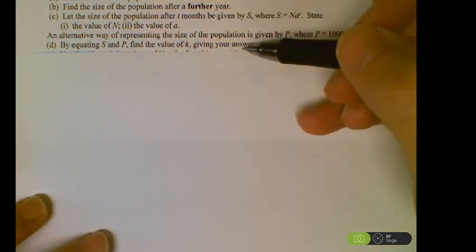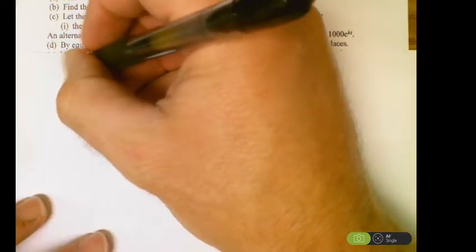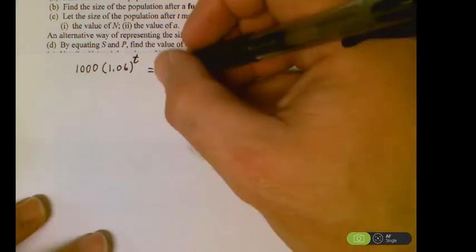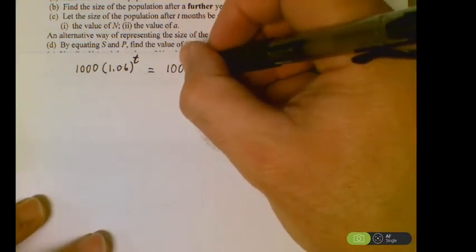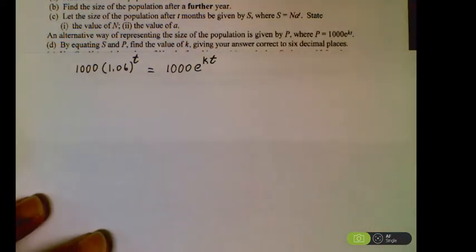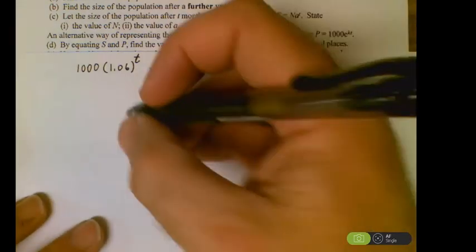We're going to be looking for the value of K. We can see that's part of the exponent, so right away we're thinking logs. It says equate those two functions. So we got S equals 1000(1.06)^T for monthly compounding. Comparing that to continual compounding, we got 1000e^(KT). This is our setup. Now we are solving for K to six decimal places. Right off the bat, I can divide both sides by 1,000.